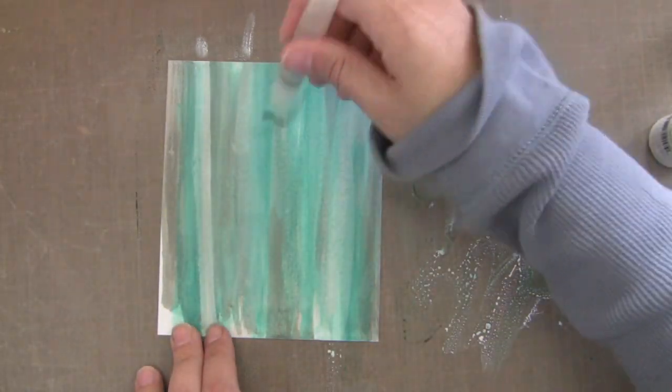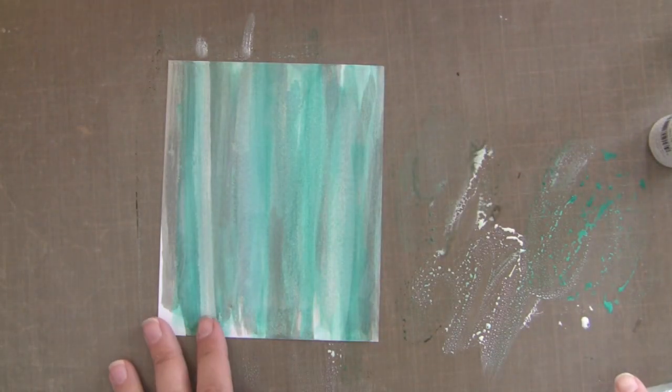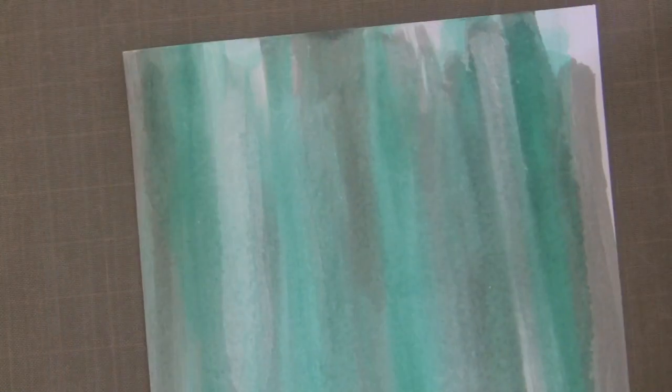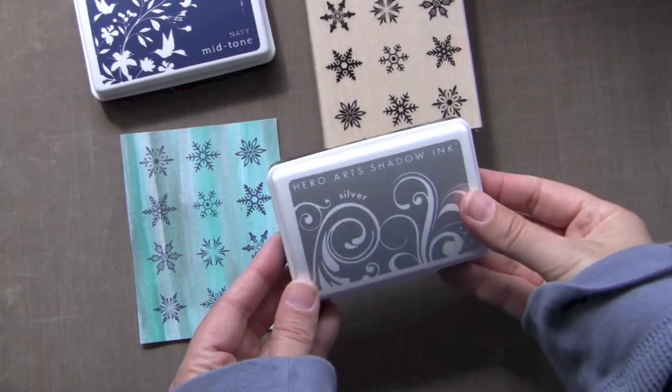And so this is looking really good. So I think I'm going to stop now. And then I went ahead and dried this with my heat tool. One trick for this is dry it on the front and the back. And that will help keep it so that it lays flat when it's dry.